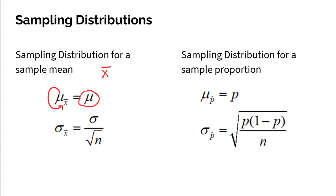Samples vary, so what's the standard deviation for all of those sample means? You take the standard deviation of your population and divide by the square root of your sample size. It's really that simple.